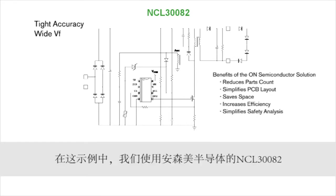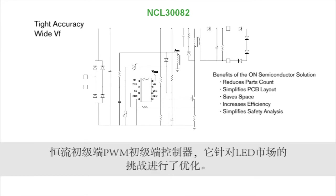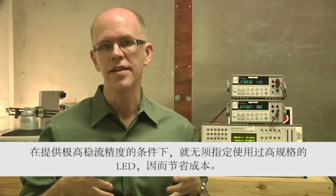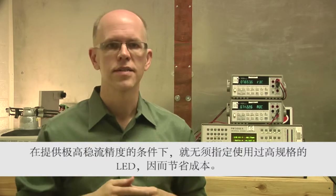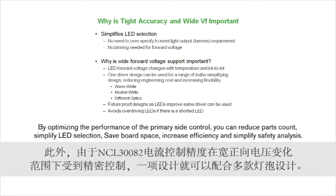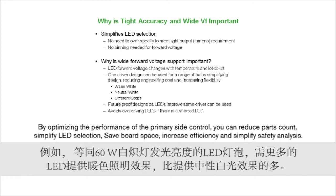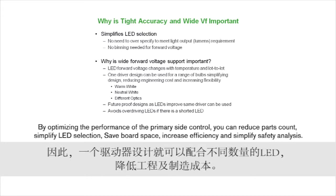For this example, we're using the NCL30082 from On Semiconductor, a constant current primary side PWM controller optimized for the challenges in the LED market. By having very tight current regulation, LEDs do not need to be over-specified, which saves cost. Moreover, because the NCL30082 current control accuracy is tightly controlled across a wide forward voltage variation, one design can support multiple bulb designs. For example, for the same 60-watt equivalent LED bulb, more LEDs are required for a warm color than a neutral white, so one driver design can support a range of LEDs, reducing engineering costs and manufacturing costs.